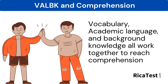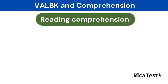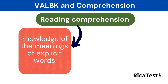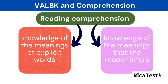Background knowledge is a key indicator of how well a student will learn new information. Vocabulary, academic language, and background knowledge all work together to reach comprehension. A reader constructs understanding of a text through both knowledge of the meanings of explicit words in the text and meanings that the reader infers from relevant background knowledge.